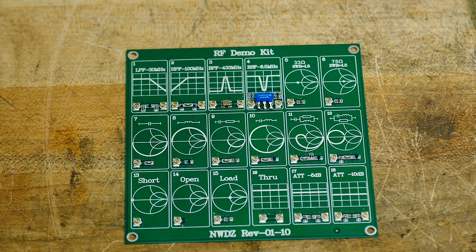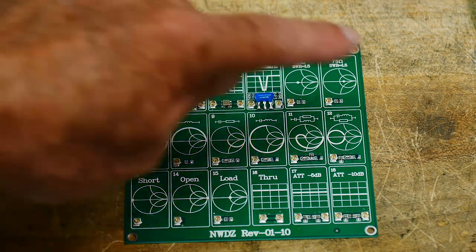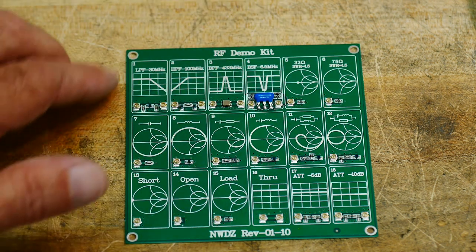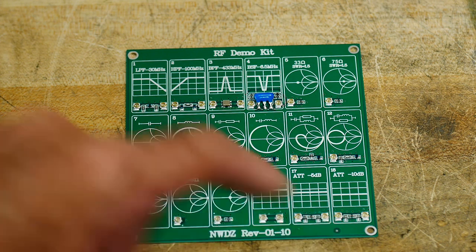It's an RF demo kit, and it's targeted at the Nano VNA, so it has a bunch of circuits, and it's got 18 circuits.